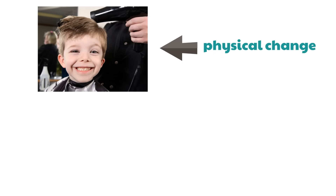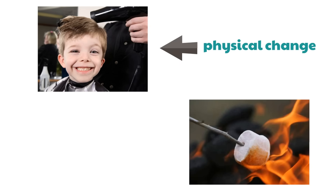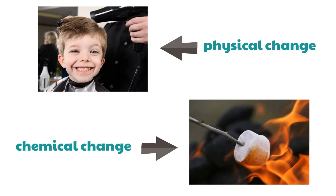What about this — a marshmallow roasting over a fire? If you put the cracker and the chocolate together, you've got s'mores. But is the change happening right here, as this marshmallow is beginning to melt in the fire and roasting, a physical or chemical change? Yeah, it's a chemical change. The type of matter itself is changing — it's darkening, turning into something different.